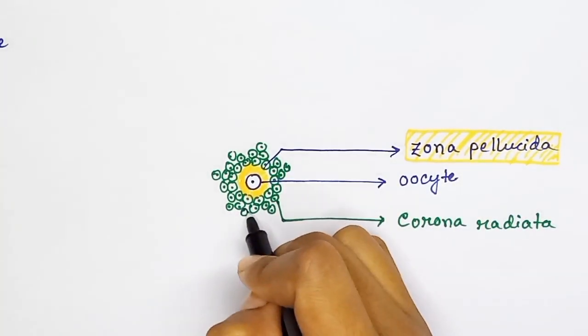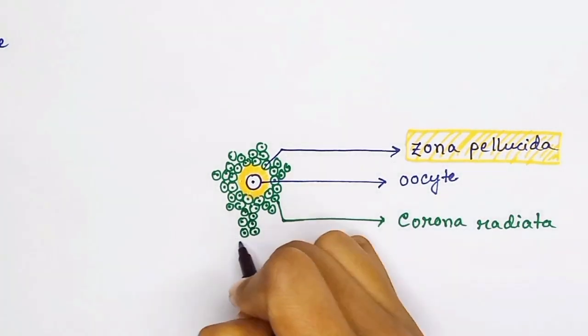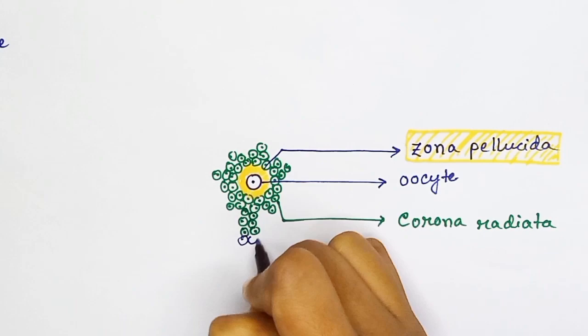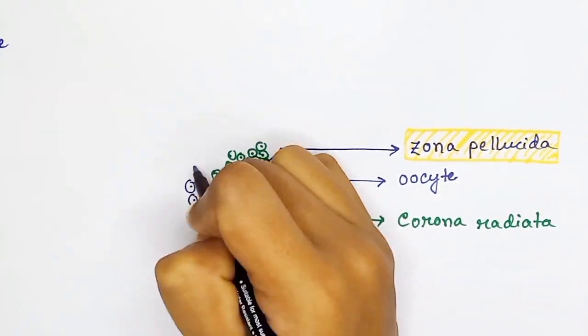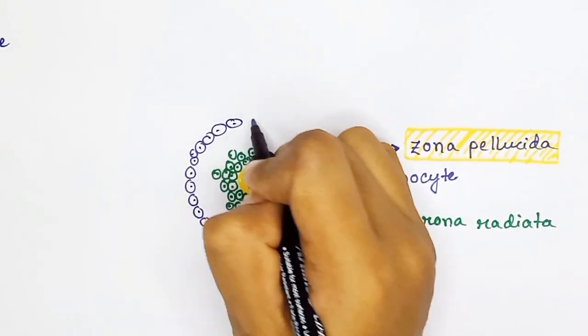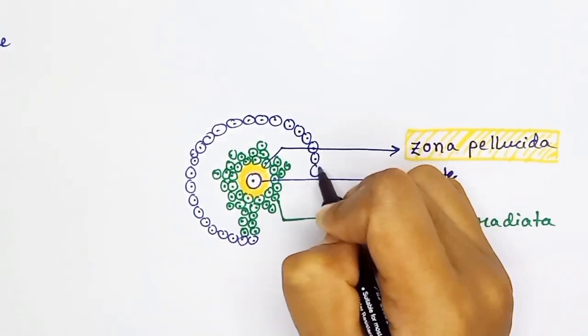This whole structure is the center of the Graafian follicle. This structure is also called the cumulus oophorus. This cumulus oophorus is floating in the antrum cavity of Graafian follicle.